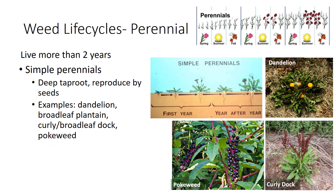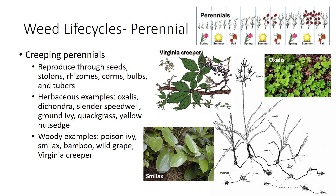Perennial weeds live for more than two years and can be divided into two groups: simple and creeping. Simple perennials form a deep taproot and spread primarily by seed dispersal. Some examples of simple perennials include dandelion, broadleaf plantain, curly and broadleaf dock, and common pokeweed. Creeping perennials may be either herbaceous or woody and can spread by both vegetative structures as well as by seed. Some common herbaceous perennials include hemp dogbane, creeping buttercup, slender speedwell, ground ivy, quackgrass, and yellow nutsedge.